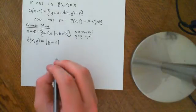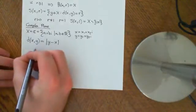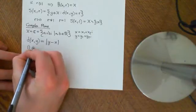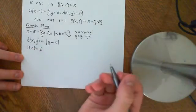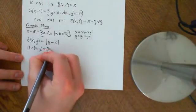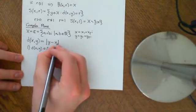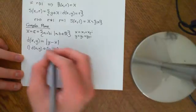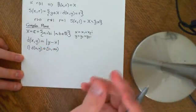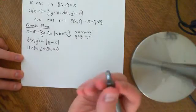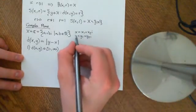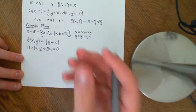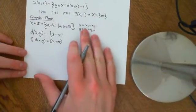Let's verify this is indeed a metric space. Firstly, the distance function between X and Y should be a non-negative real number. The modulus function maps every complex number to a non-negative real number. Since Y minus X is a complex number, taking its modulus gives a non-negative real number.